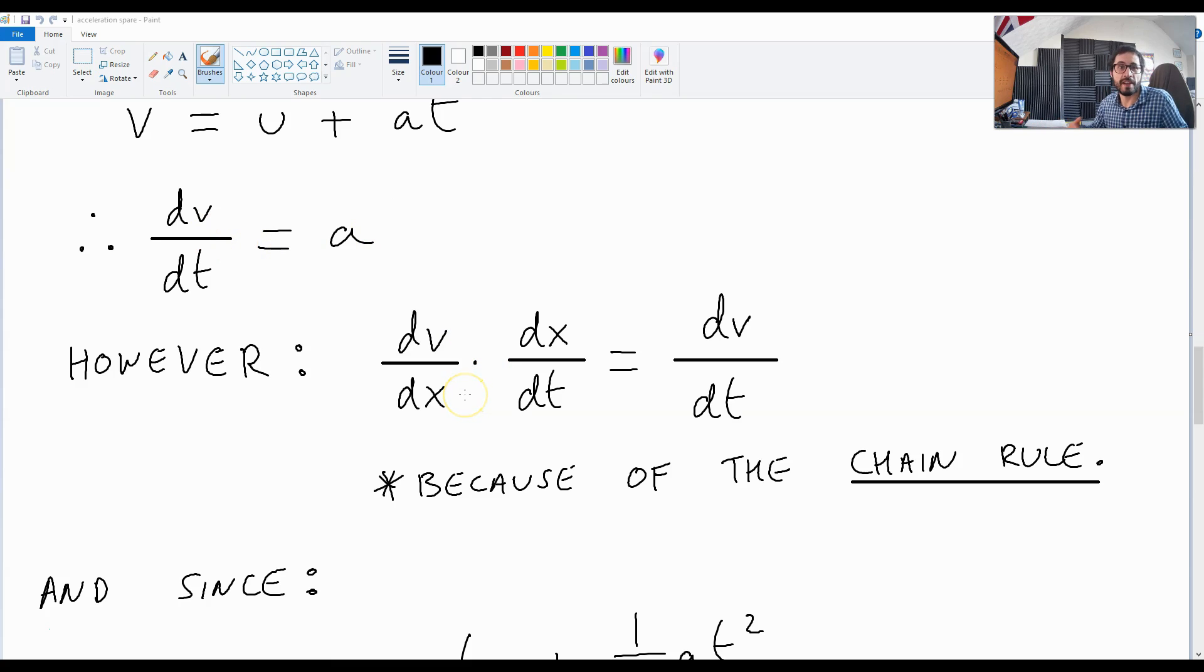However, because of the chain rule, dv over dx times dx over dt is dv over dt.